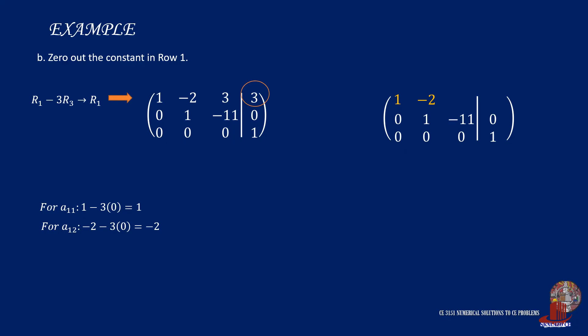Moving to the next element 1,3, we have 3 minus 3 of 0, to have 3. Then the new constant is computed as 3 minus thrice of 1, giving us 0.